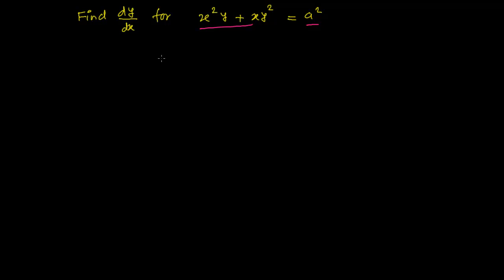Let's first write out the equation we have. Our equation is x squared y plus x y squared equals a squared, where a is a constant quantity.